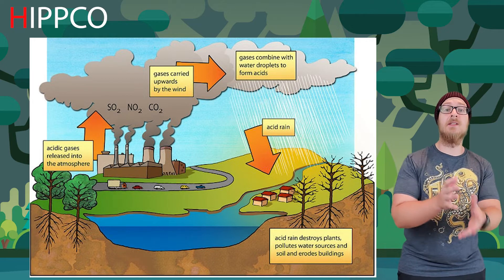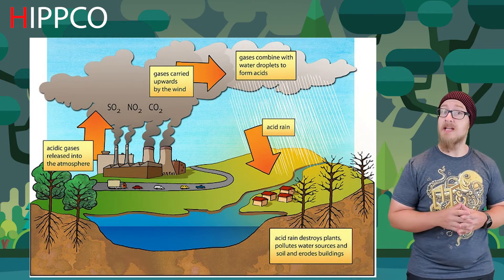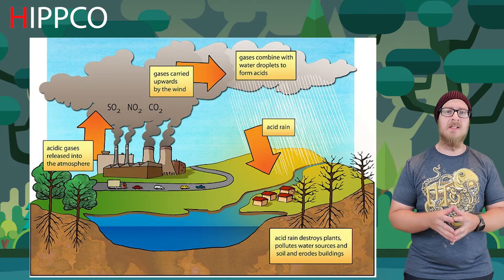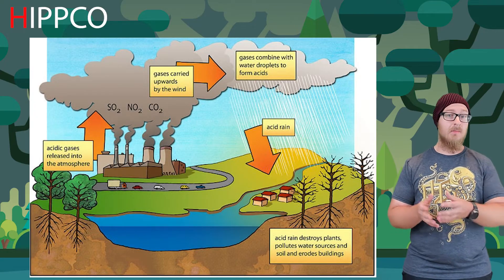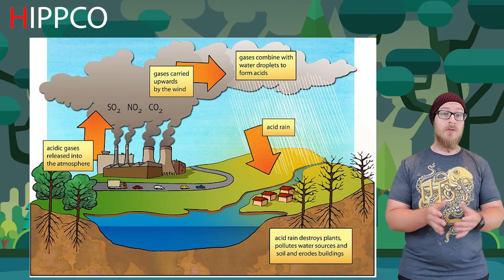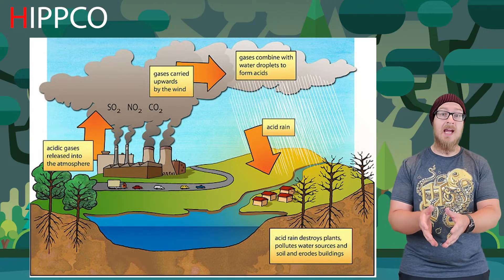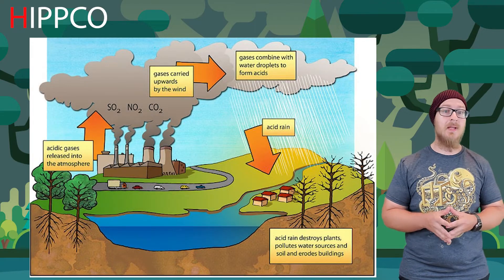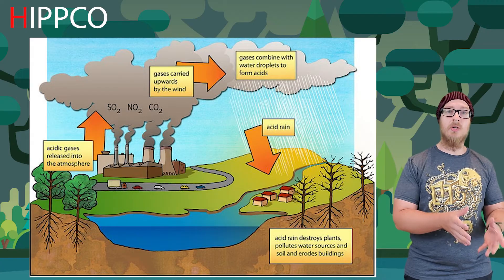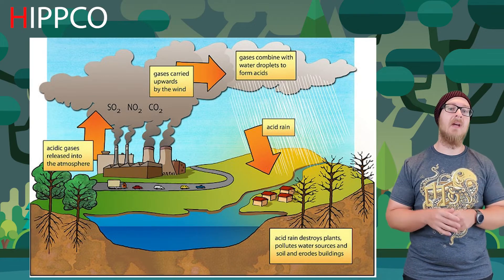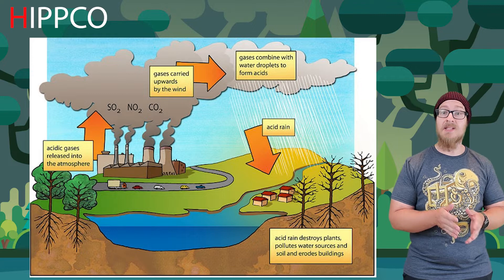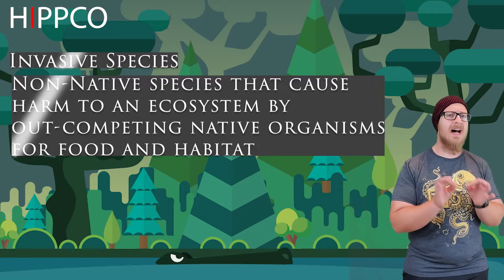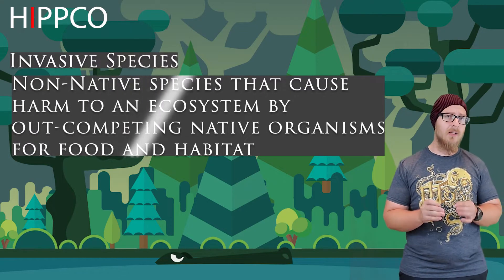A degraded habitat is one that remains intact but is negatively affected in some way. The two big drivers of habitat degradation are pollution and invasive species. Pollutants from human activities like mining or burning fossil fuels can be deposited in an ecosystem, changing air or soil quality and reducing biodiversity. Acid rain, for example, can reduce the pH of soils, making it difficult for seeds to germinate and reducing cation exchange capacity so existing plants can't absorb as many nutrients.